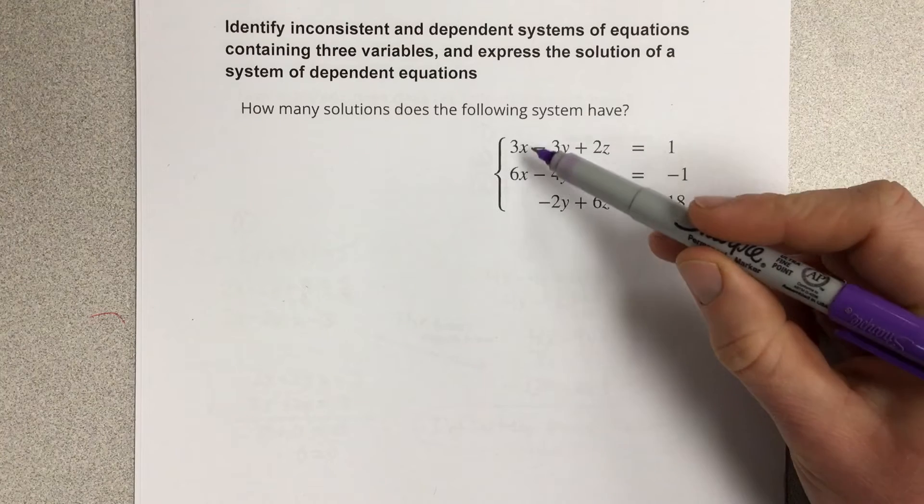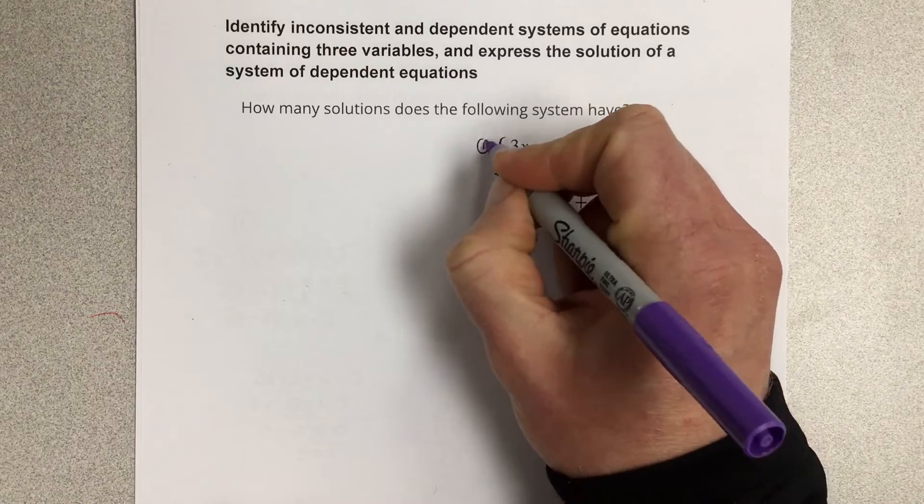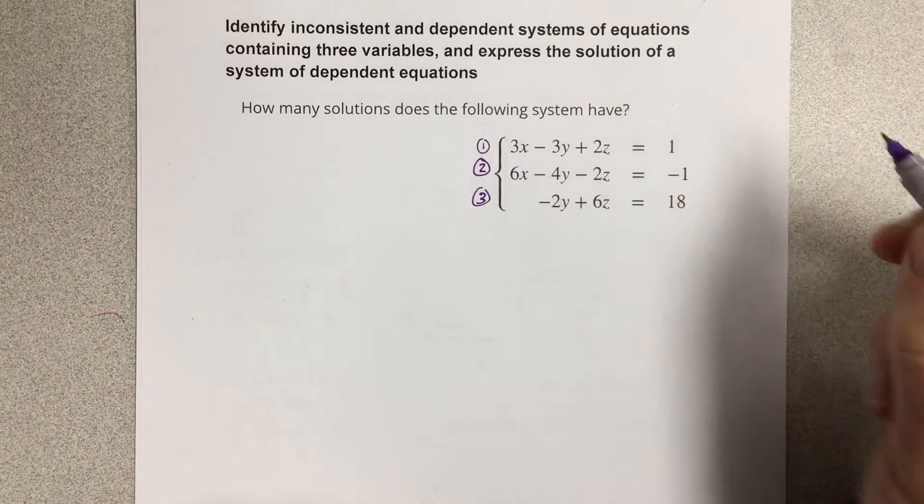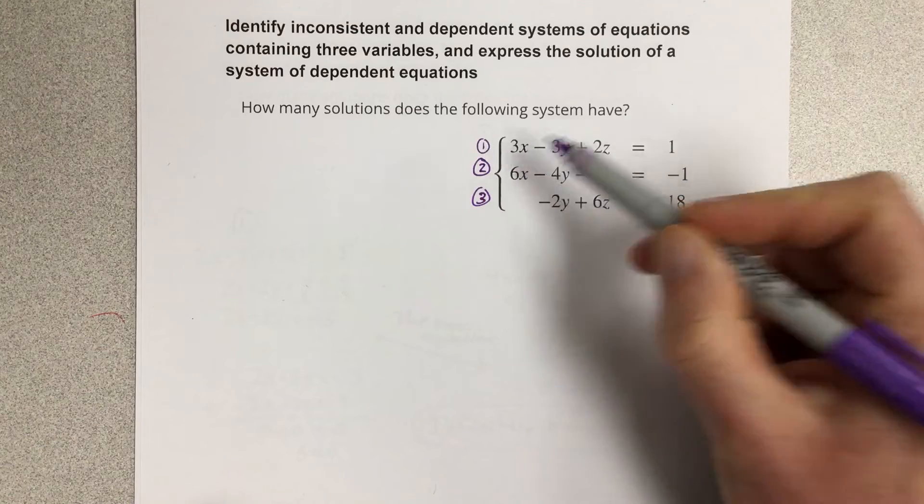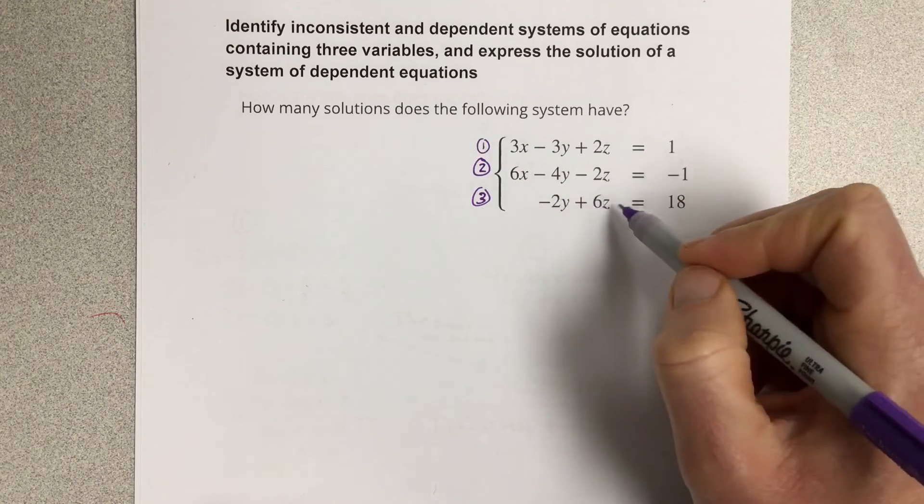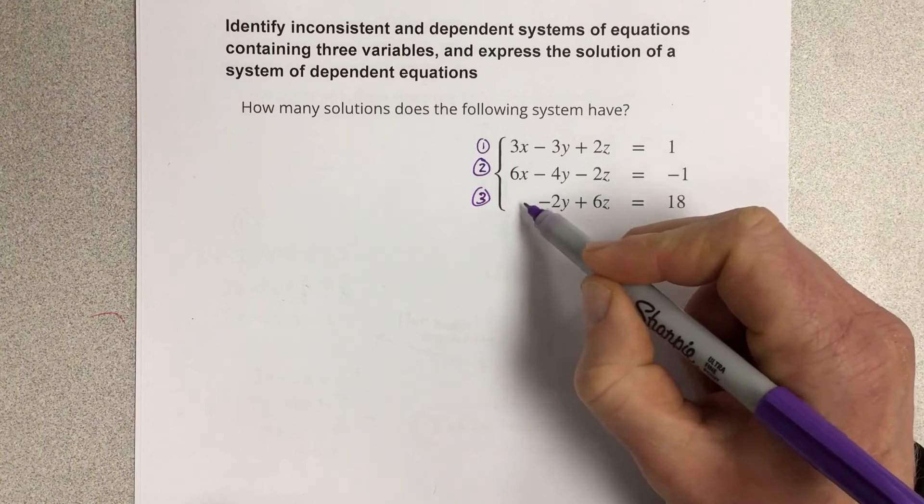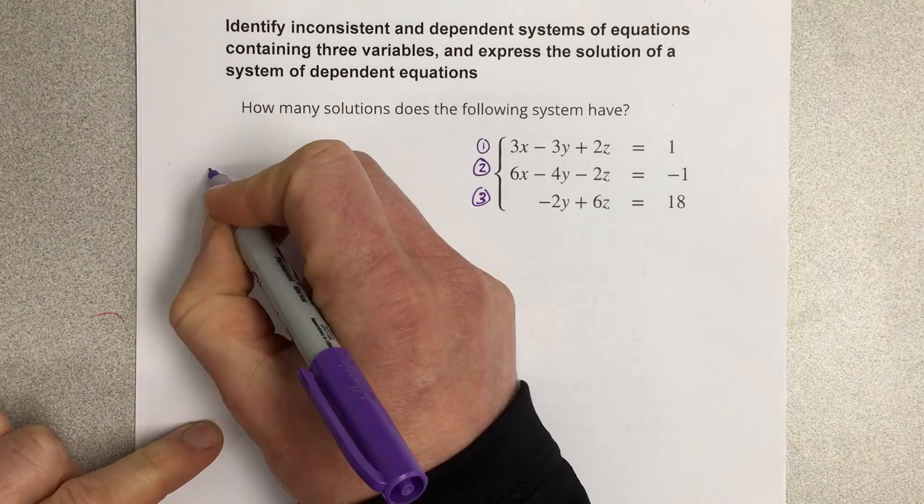But the first thing we're going to do is we're going to combine the first two equations together and we're going to cancel out this x value here. And the reason I want to do that is because the last equation has no x value there, so let's combine one and two together and cancel x.